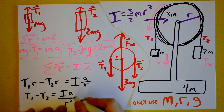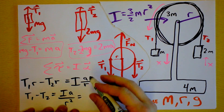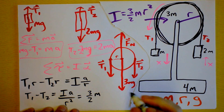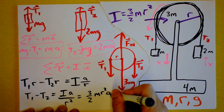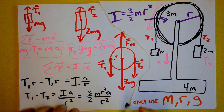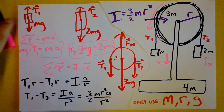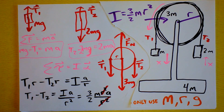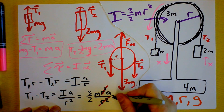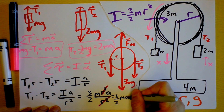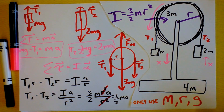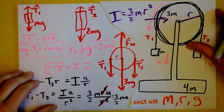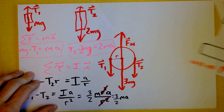I'm going to solve this for T1 minus T2 by factoring out R and then dividing both sides by R, to get I times a over R². Now plugging in what I is — that's three-halves MR² — I get three-halves MR² times a over R². The R² cancels, and this simplifies beautifully to three-halves Ma. Three-halves mass times acceleration — that's our third equation.